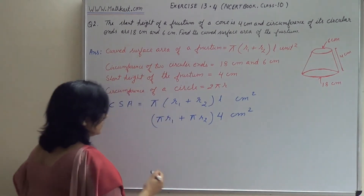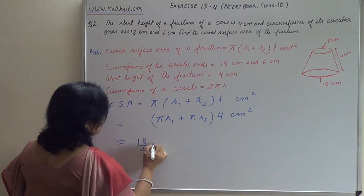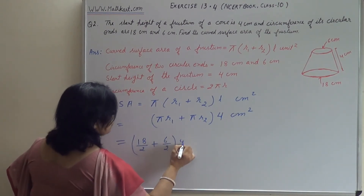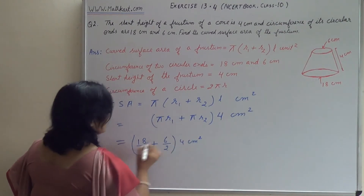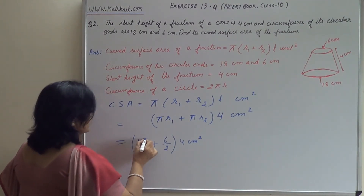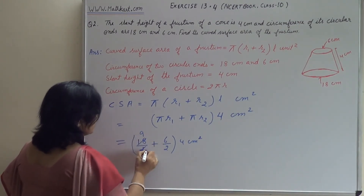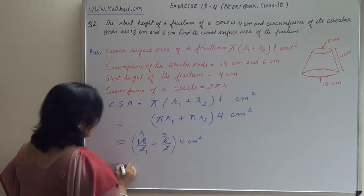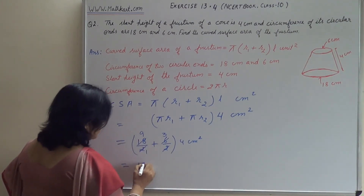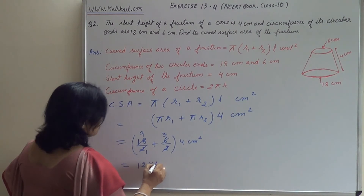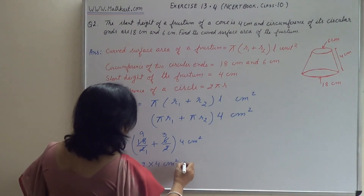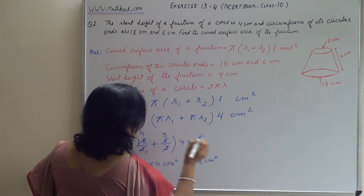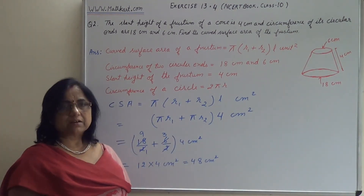So we calculate: (18/2 + 6/2) × 4 cm². The 2 cancels with 18 to give 9, and the 2 cancels with 6 to give 3. So the next line gives us: (9 + 3) × 4 = 12 × 4 = 48 cm². Our answer is 48 cm².